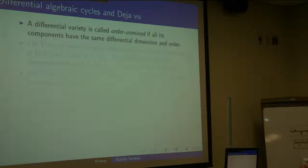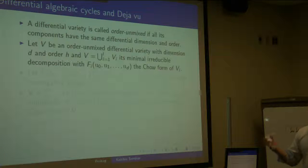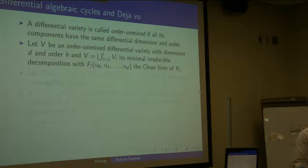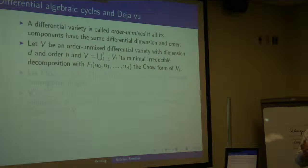Now I want to define differential algebraic cycles in general, in the same way I defined algebraic cycles before, and define differential Chow forms of differential algebraic cycles. A differential variety is called order unmixed if all components have the same Kolchin polynomial, the same differential dimension, and the same order — roughly equidimensional.